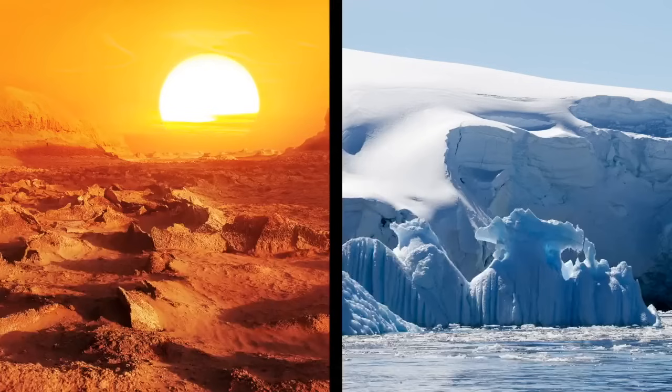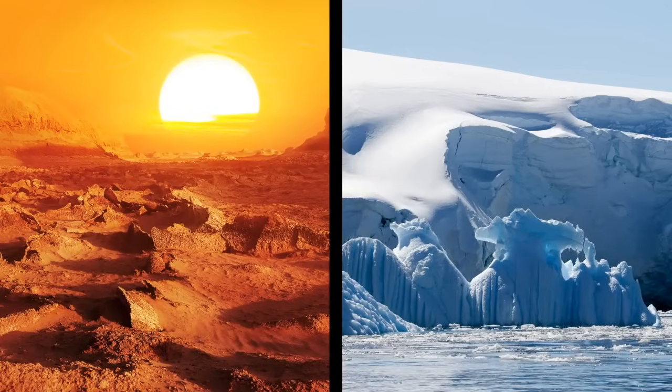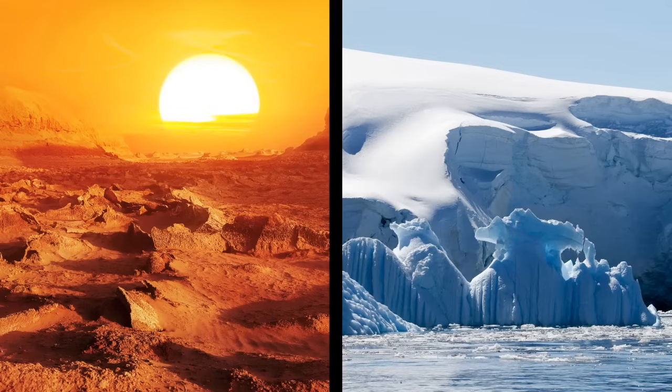Living things can't survive on planets with extreme temperatures that are either way too hot or way too cold. But somewhere in between, there's a zone, a place in the solar system, where the temperature is just right for life. A place that's not too hot and not too cold.